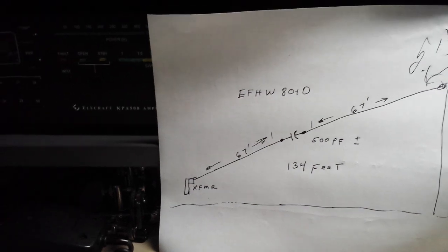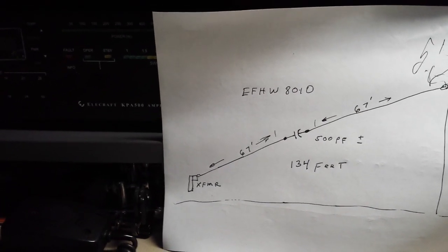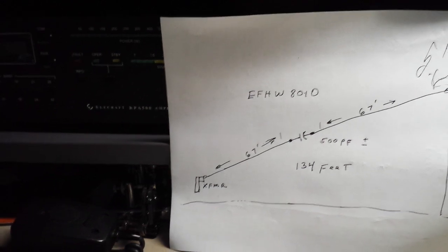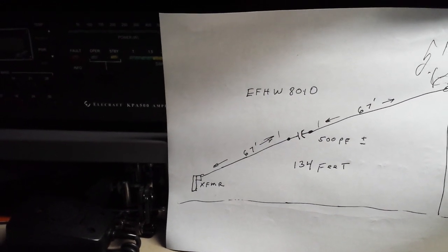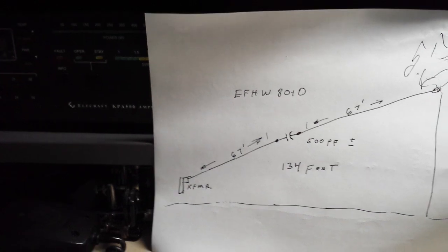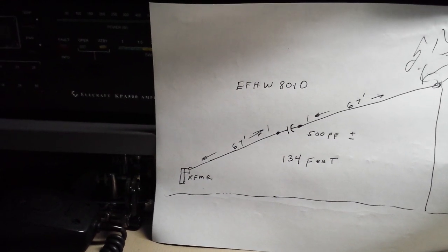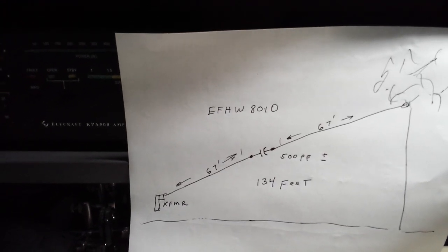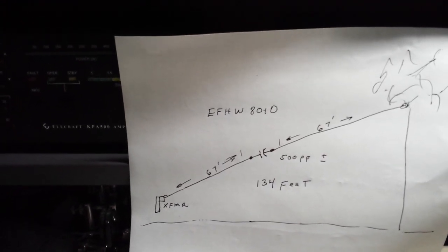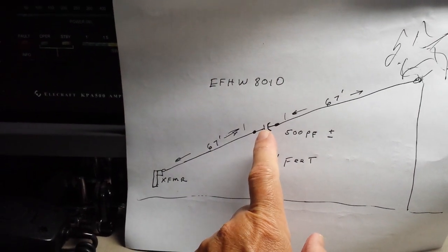You'll find that the SWR is low across 40 meters. On 80 meters it's typically about one and a half to one at the lowest point. Usually by the time that you get up to about 3650 or so your SWR gets pretty high, and by the time you get to the phone band it gets really high. So we installed this capacitor.